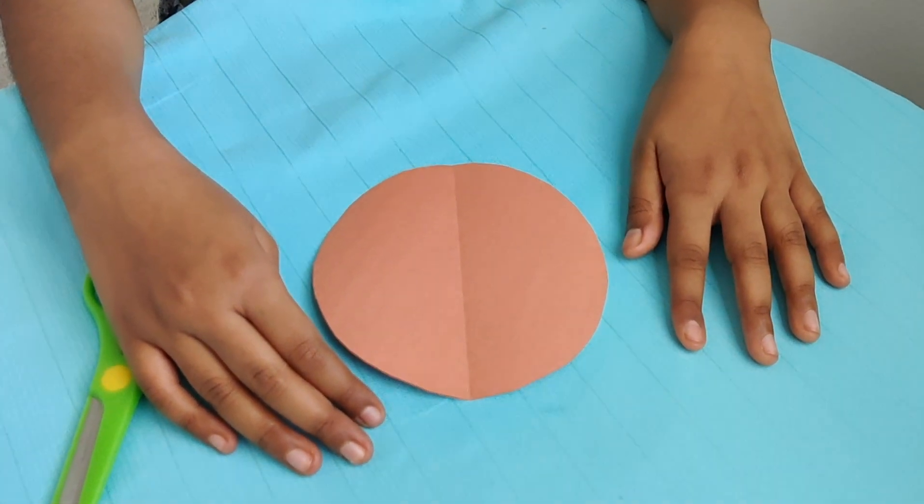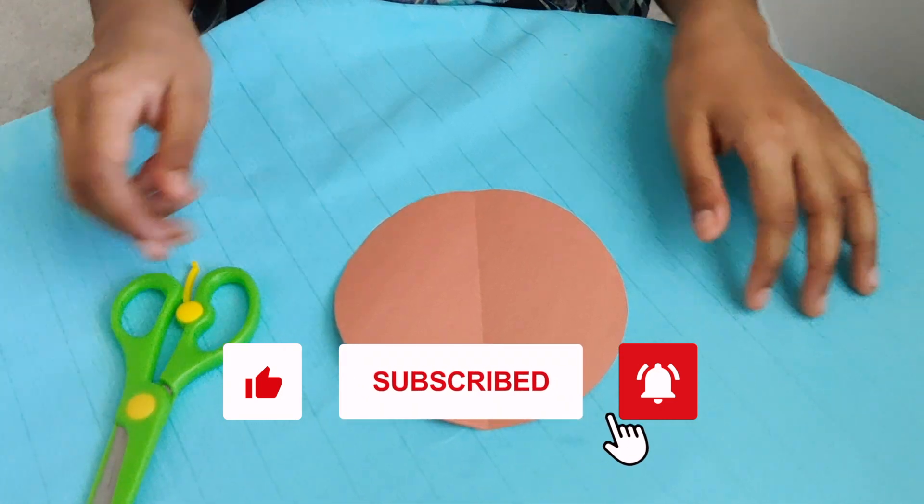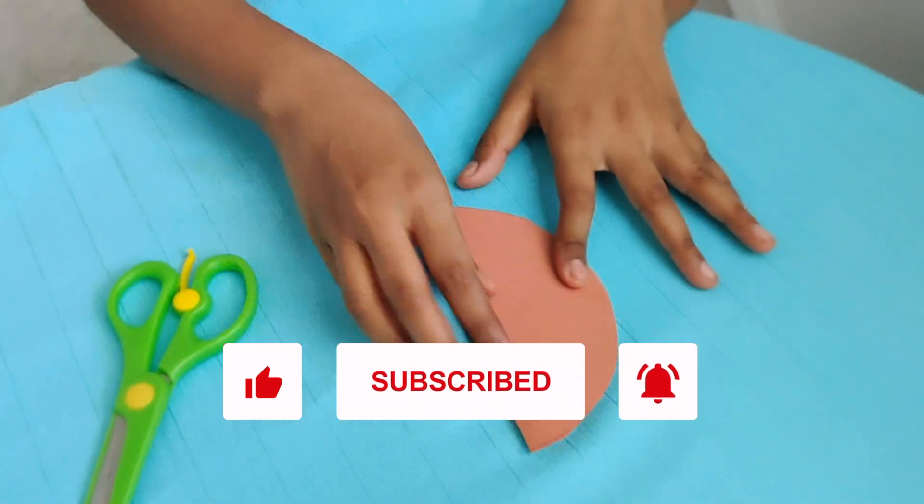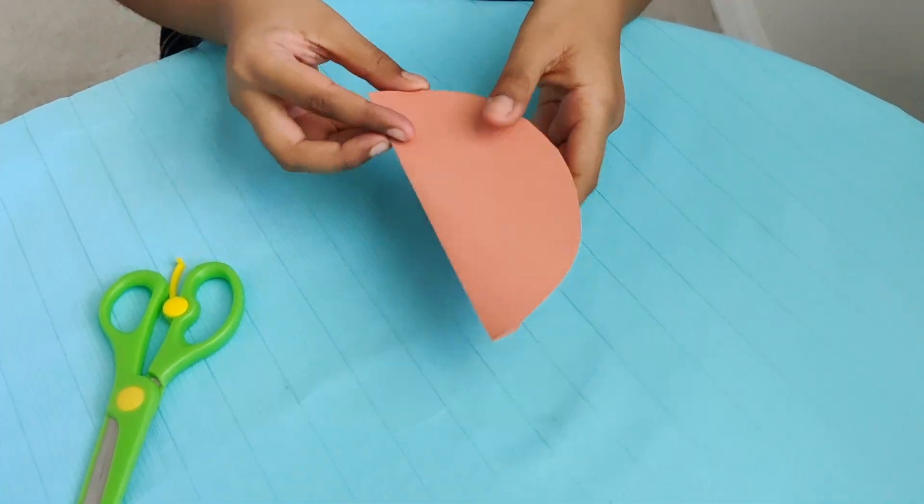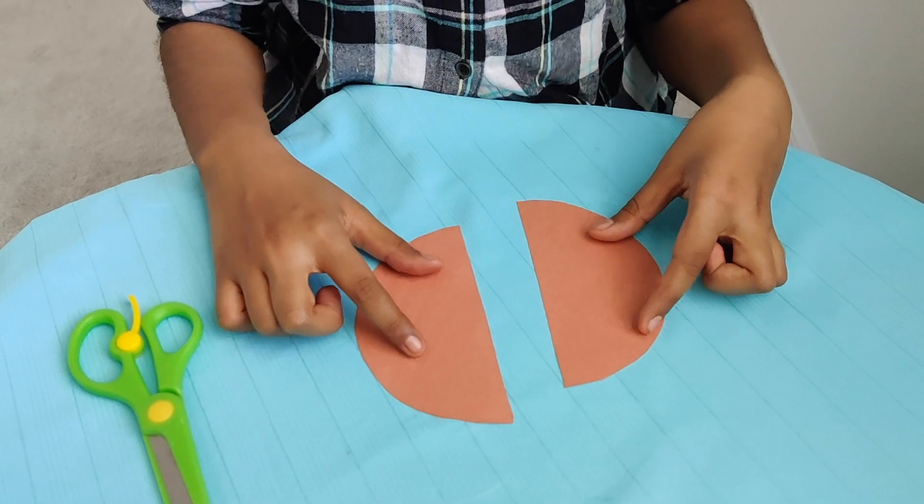Take a brown construction paper that is in a circle, which is a medium circle. Fold it in half and cut it. Now you have two halves.